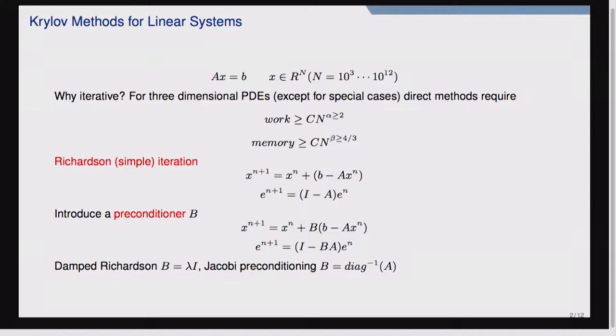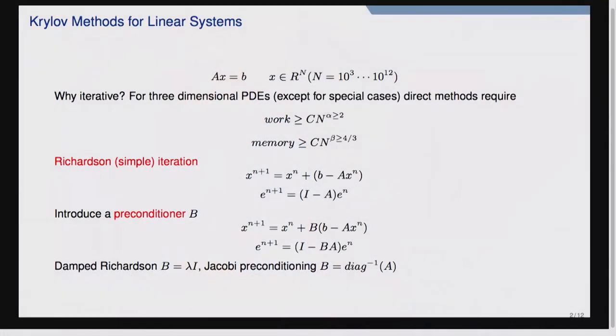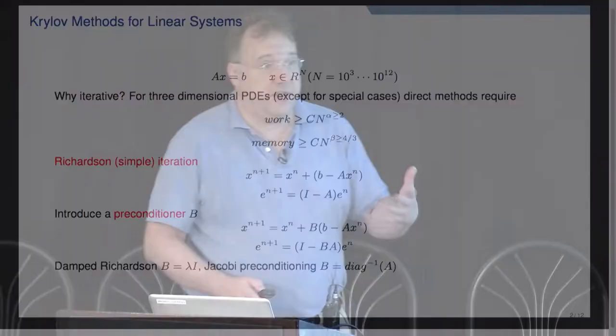There's a concept of preconditioning iterative solvers, where you introduce another operator B. After you compute the residual, you apply the B operator and use that as your update. If B is exactly A inverse, this converges in one iteration. The idea behind preconditioners is they're a relatively inexpensive way of approximately applying the inverse of the operator. Simple examples include damped Richardson — applying a lambda less than one — or using the inverse of the diagonal of A as your preconditioner.